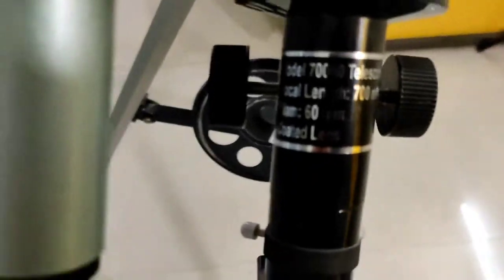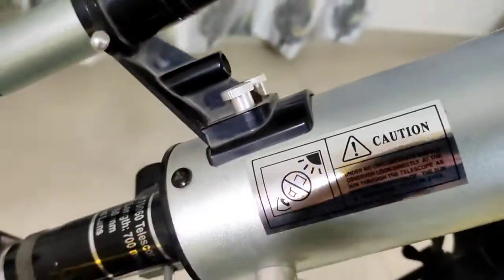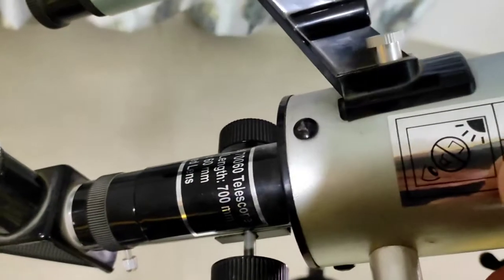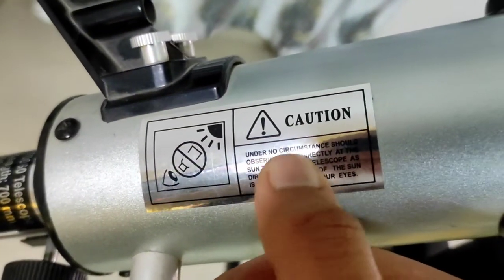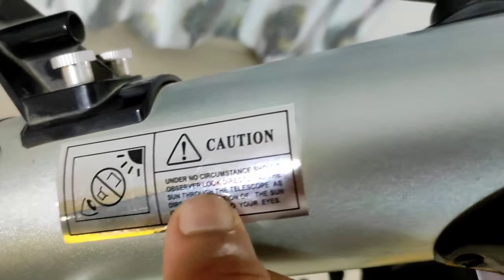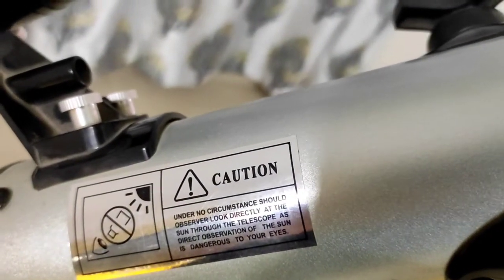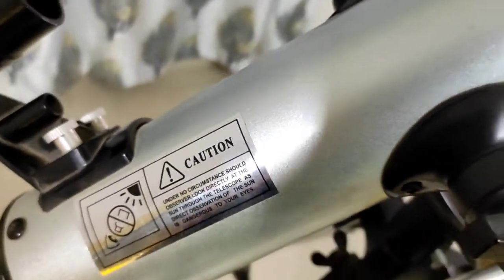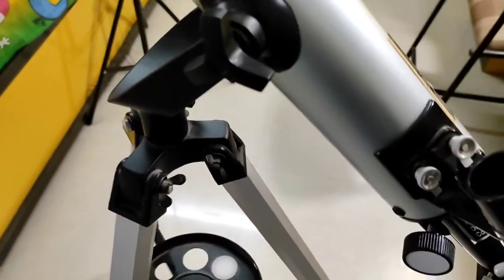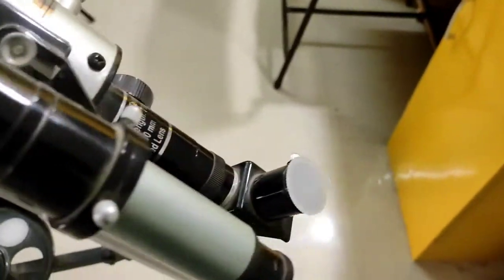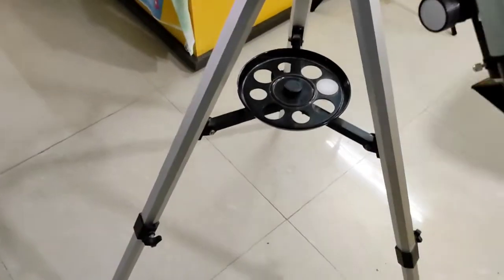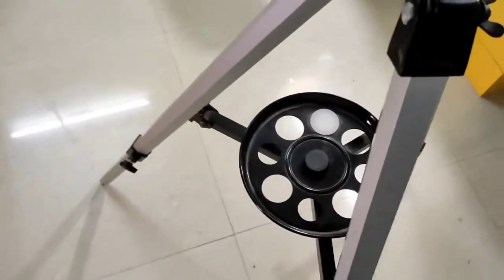If you look at the aluminum body, there's one more sticker which is a caution. It says that under no circumstances should an observer look directly at the Sun through the telescope, as direct observation of the Sun is dangerous to your eyes. I actually tried to observe the Sun in early morning, but that was the worst experience I had with this telescope because the lens got too hot.